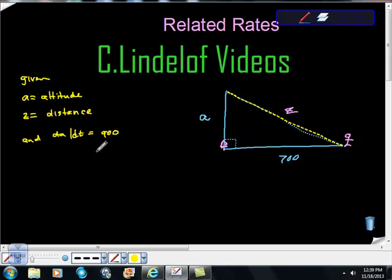And they also tell us that the rocket is launched straight up, given the fact that it's a right triangle at a rate of 900 feet per second. So they want to know how fast is this distance changing.